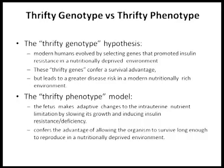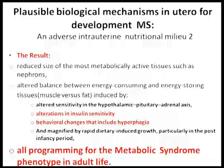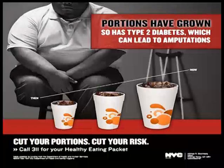This audience is very familiar with the thrifty genotype and the thrifty phenotype. We know the intrauterine factors — I am not going to go into detail, but fetal adaptive responses and epigenetic mechanisms exist for insulin resistance. The result of all this adaptation in utero is altered insulin sensitivity and behavioral changes including hyperphagia, which persists later on and leads to more insulin resistance. All this programming leads to the metabolic syndrome phenotype in adult life, which is nothing but insulin resistance. This is happening even in India — portions have grown, it is all behavior, leading to more and more insulin resistance.